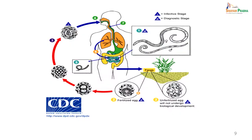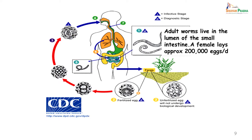Now let us look at a picture of what I asked you to visualize. The adult worm lives in the lumen of the small intestine. A female lays approximately 2 lakh eggs per day — that is a large number. These eggs are passed with the feces and may be unfertilized or fertilized depending on whether only a female or both male and female are present. If only a male is present there will be no eggs.